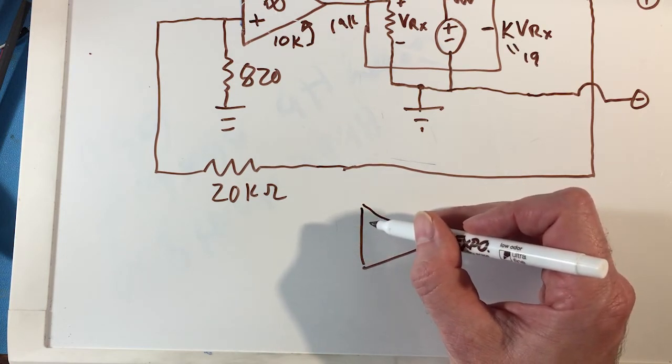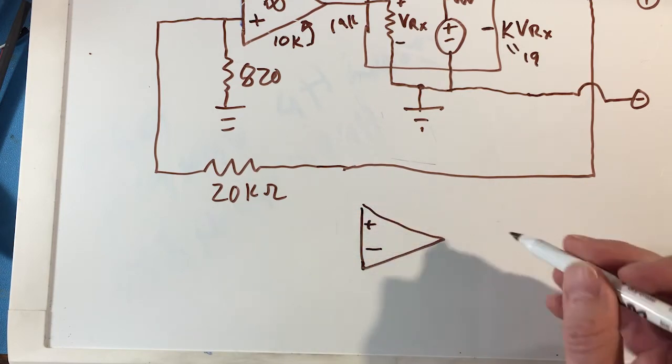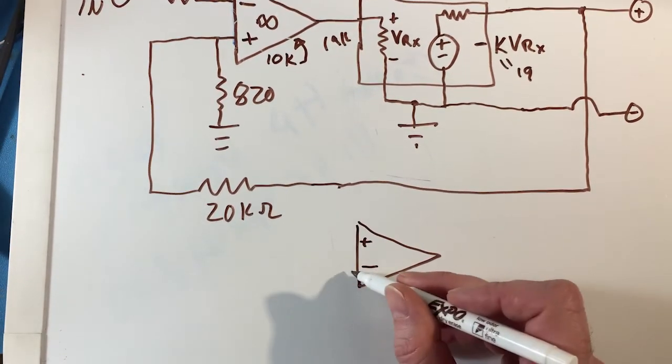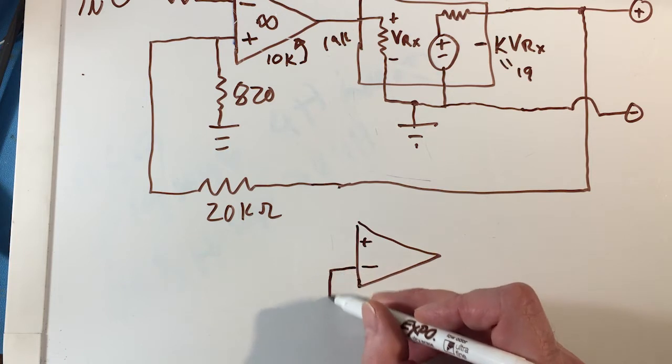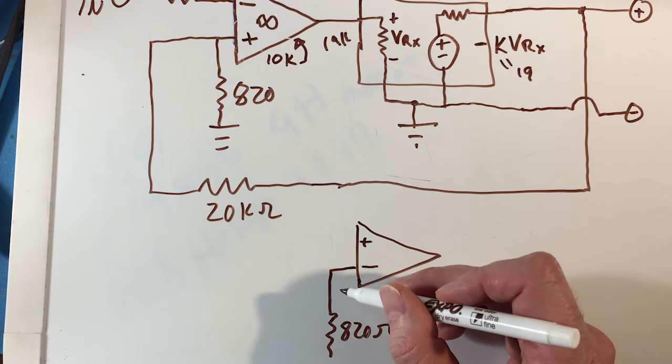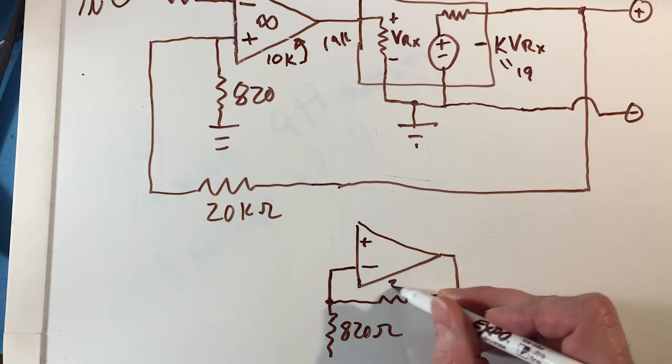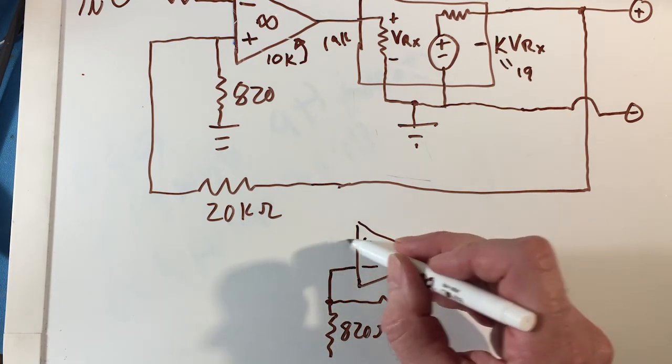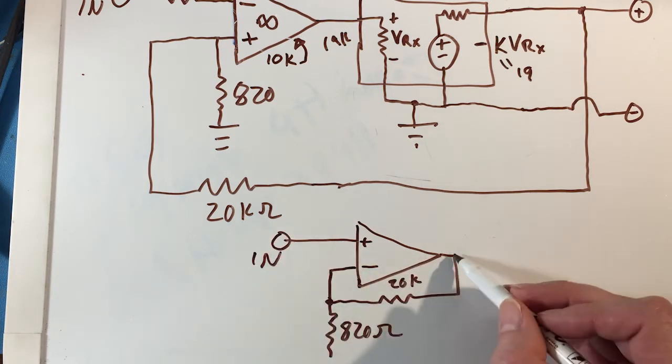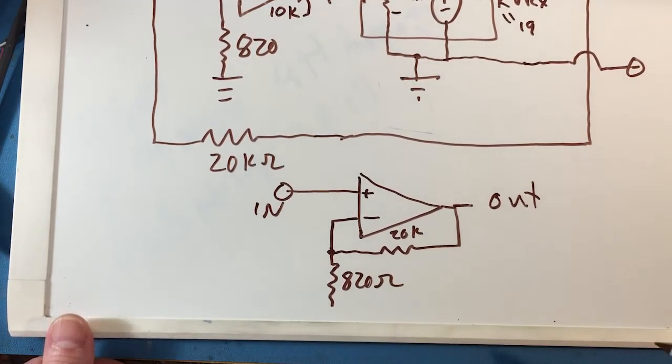And here we could switch the signs around a little bit. Notice I switch my positive and negative signs on my op-amp. There's my 820 ohm resistor going to ground. My 20k feedback resistor and my input right there. That's the IN and that's the OUT. And we can solve that. You learned how to solve that in class. Right?